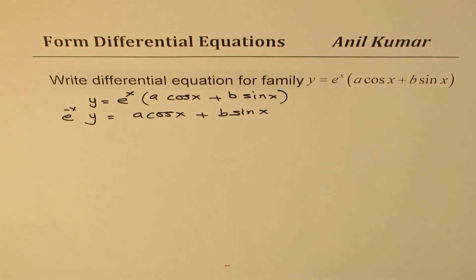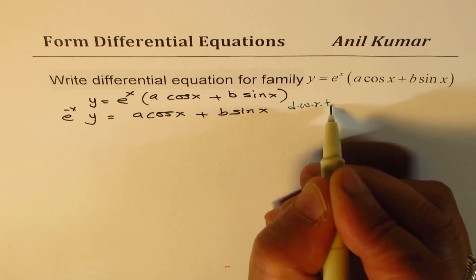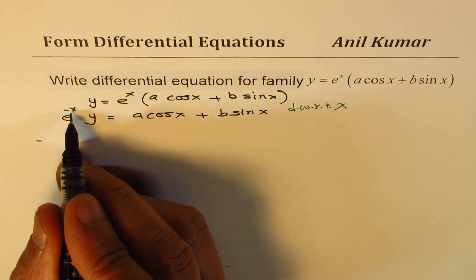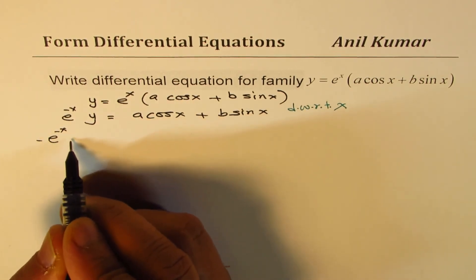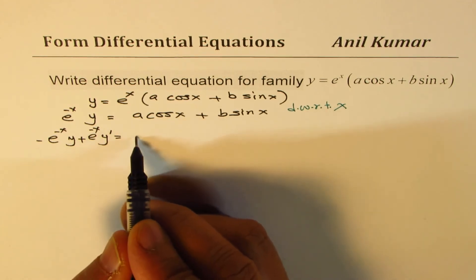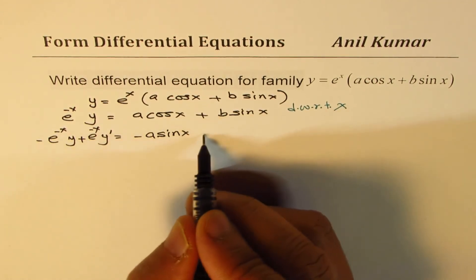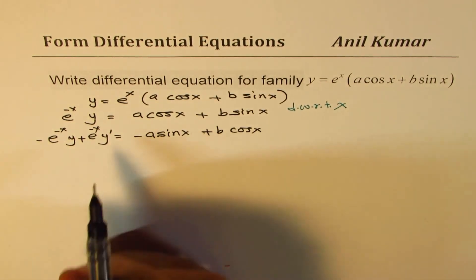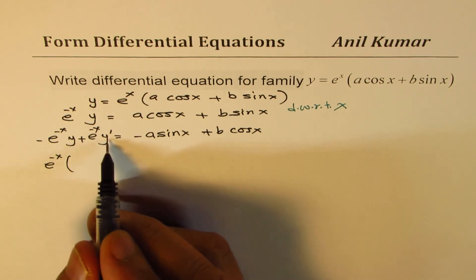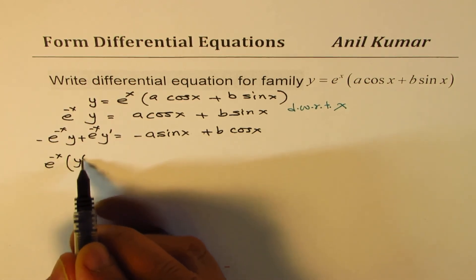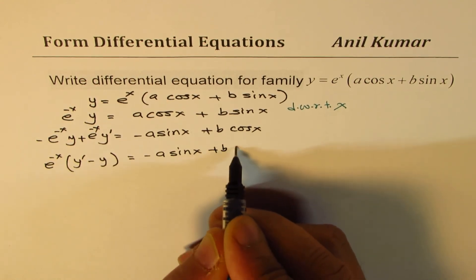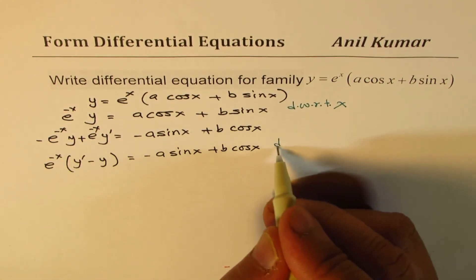Now differentiate with respect to x. Applying the product rule: -e^(-x)·y + e^(-x)·y' = -a sin x + b cos x. Taking e^(-x) common, since we have a negative sign, we get e^(-x)(y' - y) = -a sin x + b cos x.